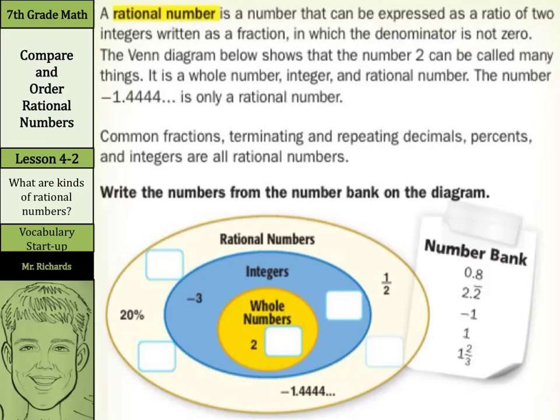The Venn diagram below shows that the number 2 can be called many things. It's a whole number, but it's also an integer and a rational number. Compare that to negative 1.4444 down here, and that's only a rational number. It's not an integer and not a whole number. Common fractions, terminating and repeating decimals, percents, and integers are all rational numbers.